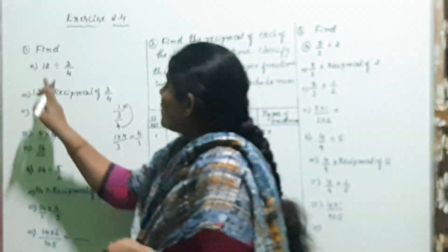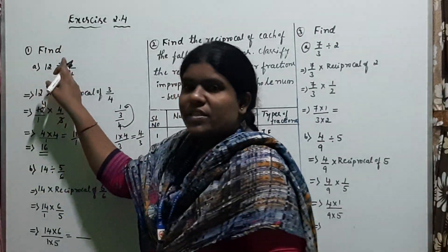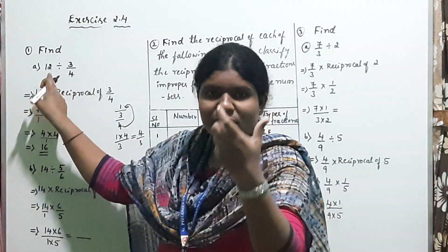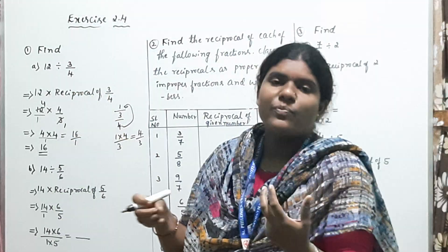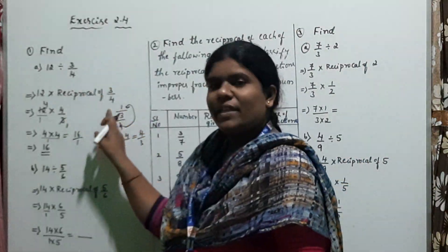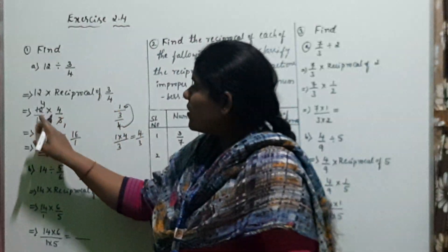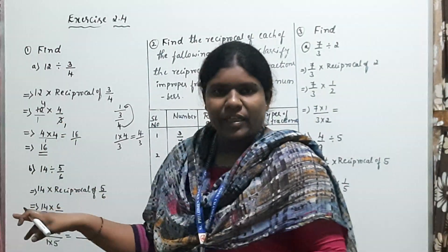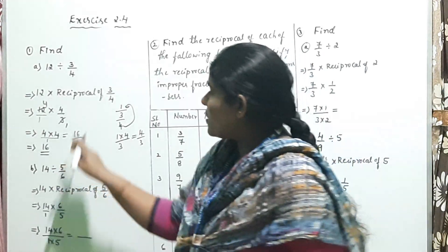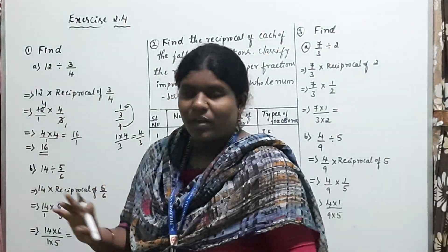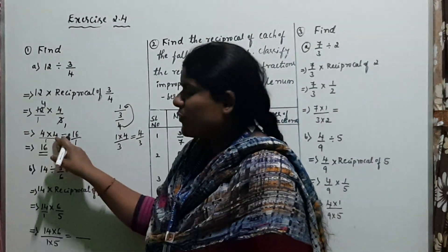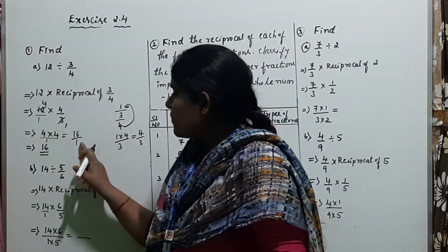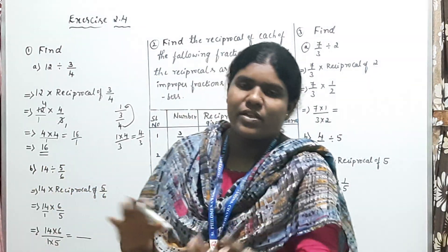Let me repeat once again. To find 12 divided by 3/4: keep 12 as the whole number, write it as 12/1, and multiply by the reciprocal of 3/4, which is 4/3. So 12/1 into 4/3. Using the 3 table, 12 cancels 4 times. Then 4 into 4 divided by 1 equals 16/1. The final answer is 16.